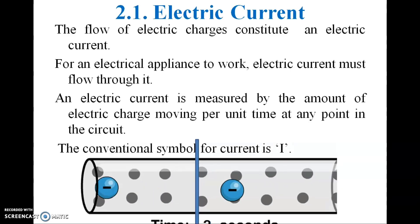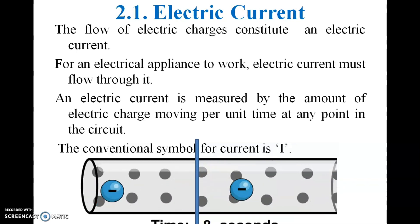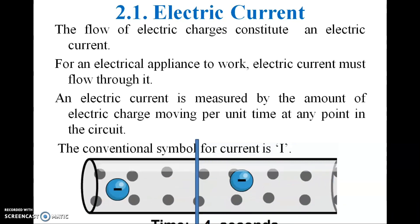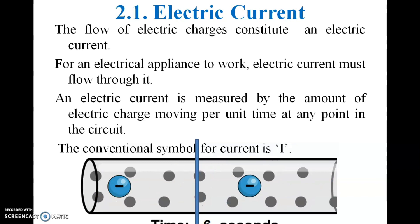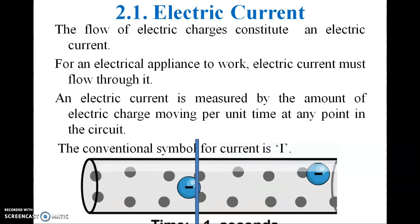Now we will look at electric current. The flow of electric charges constitutes electric current. For an electrical appliance to work, electric current must flow through it. Electric current is measured by the amount of electric charge moving per unit time at a point in a circuit.